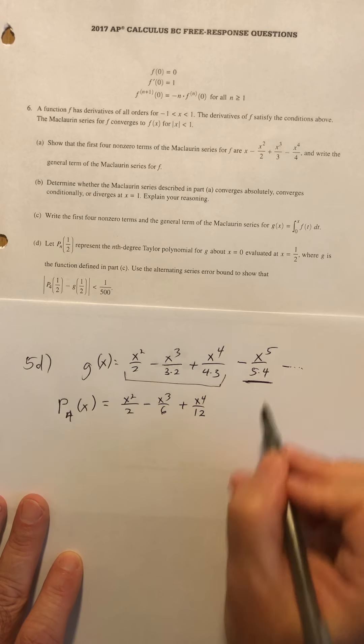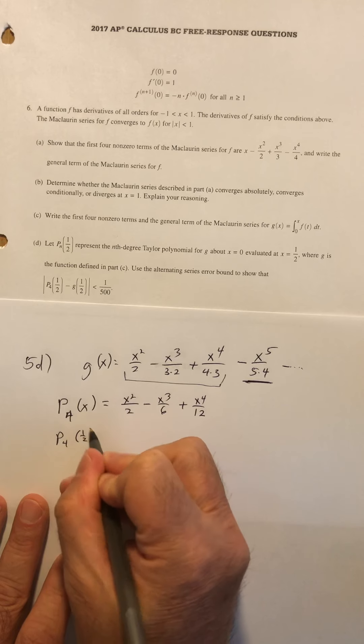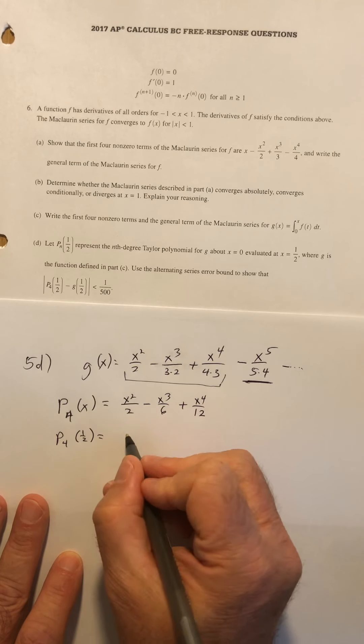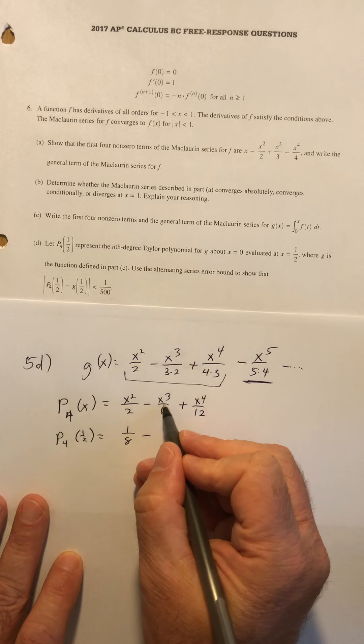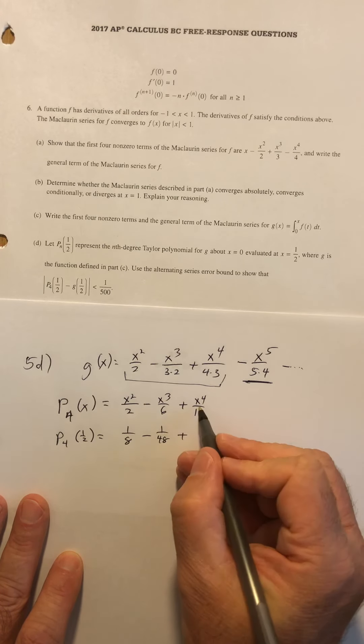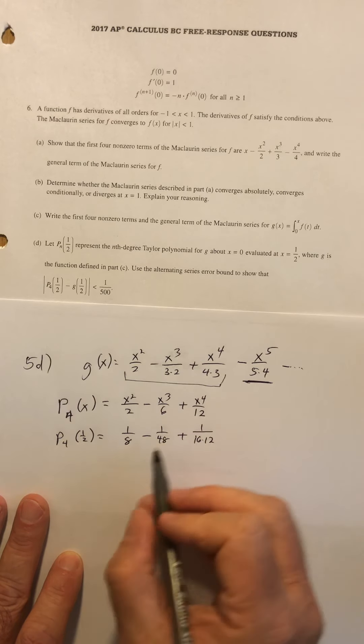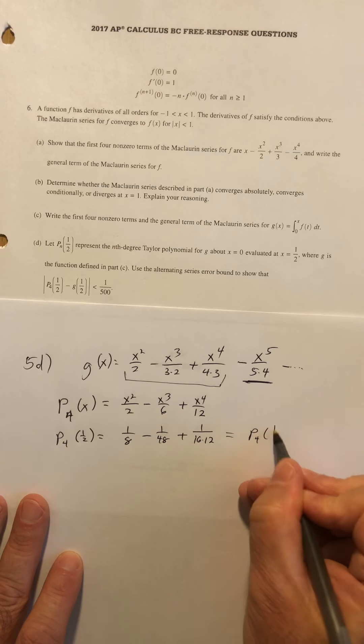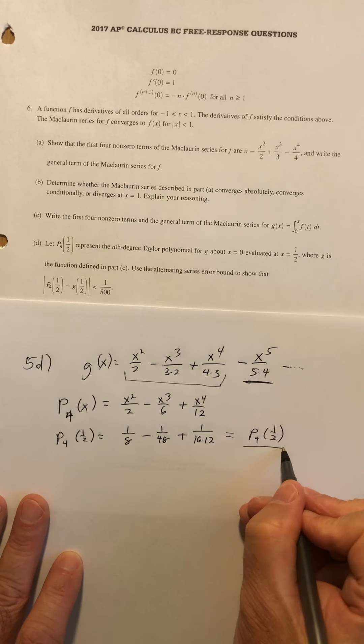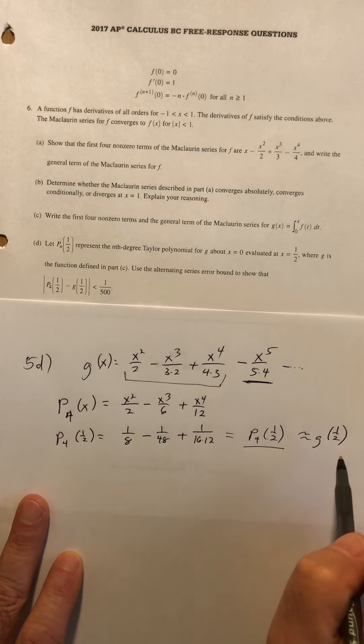This last term is going to become important because it's going to involve our error. But let's go ahead and do P4 of a half. That's going to be one half squared over two. That's one eighth. One half to the third is one eighth. That's one forty eighth. And one half to the fourth is one sixteenth. So I'm just going to write this as 16 times 12. I don't think you actually even have to find this. But this would be the value of P4 of a half. So that's an estimate for G of one half, which is the true value of the function. And these are going to be very, very close to each other. How close?